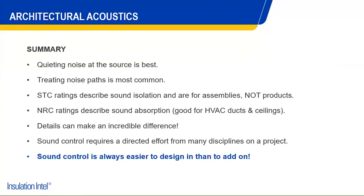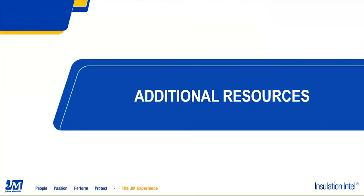In summary: quieting the noise at the source is best; treating it along the path is the most common approach and easiest to alter in design. STCs describe sound isolation of assemblies, not products. NRC ratings describe absorption and are good for HVAC ducting and ceilings. Details make all the difference — trying to retrofit a wall assembly to improve sound control can be extremely expensive and not very effective if there are already ingrained issues. With that, this concludes the learning portion of the webinar.